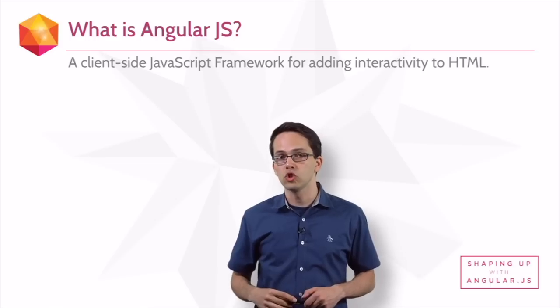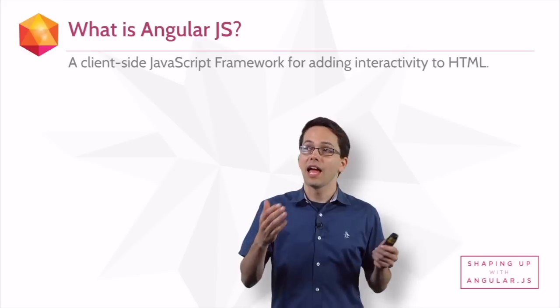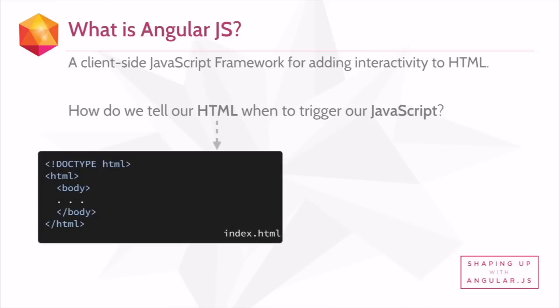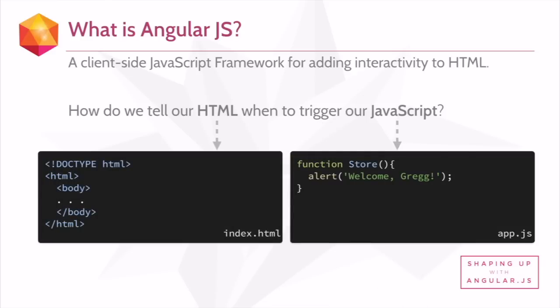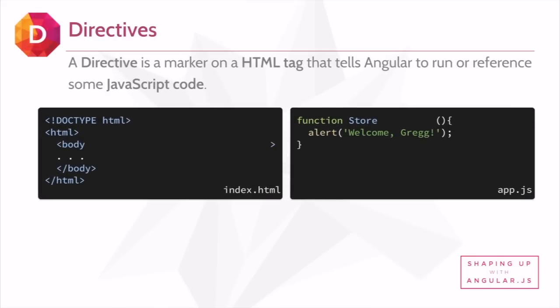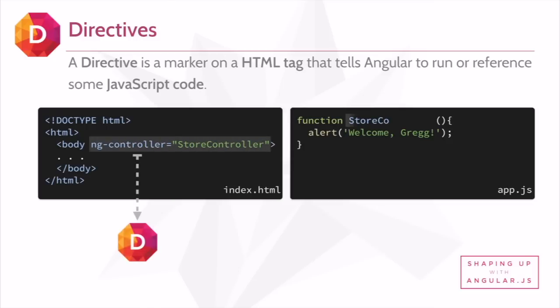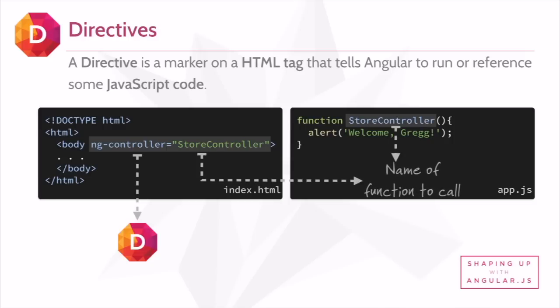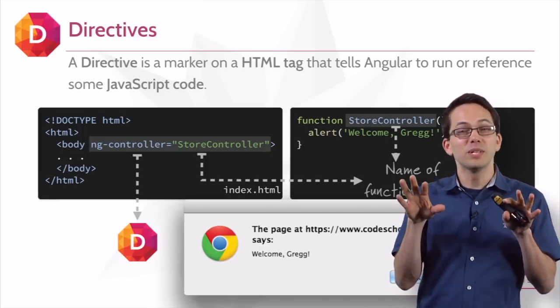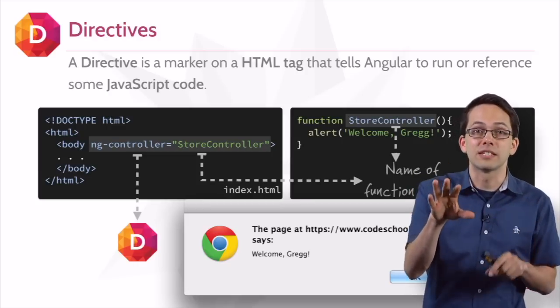A simple definition of Angular is a client-side JavaScript framework for adding interactivity to HTML. We need to figure out how to tell our HTML when to trigger our JavaScript. So here we have some HTML — how might we tell it to call this function, which triggers an alert? In Angular, we add behavior to our HTML through directives. A directive is a marker on an HTML tag that tells Angular to run or reference some JavaScript code. So the answer here is to add the attribute ng-controller to our body tag, setting it equal to storeController, which is the name of our function. Directives — it's how we bind the behavior.